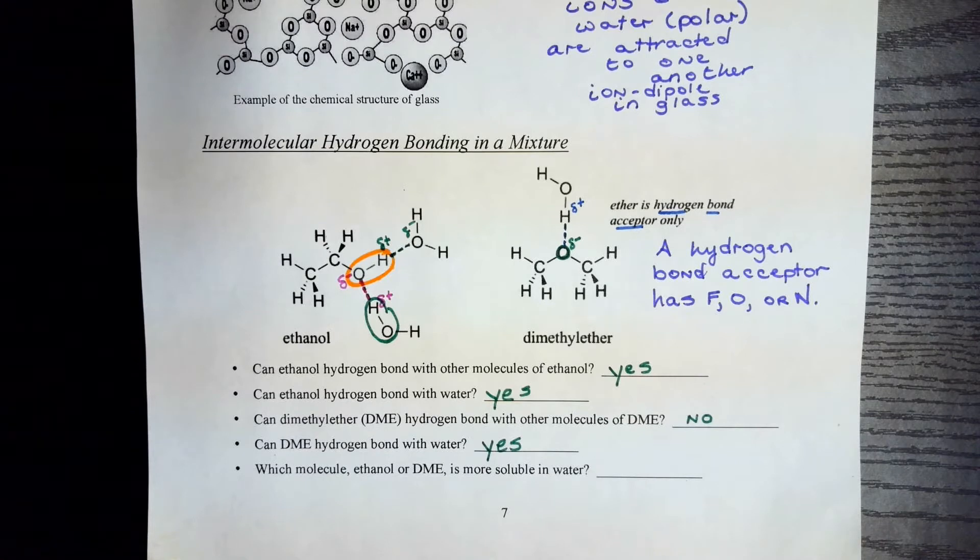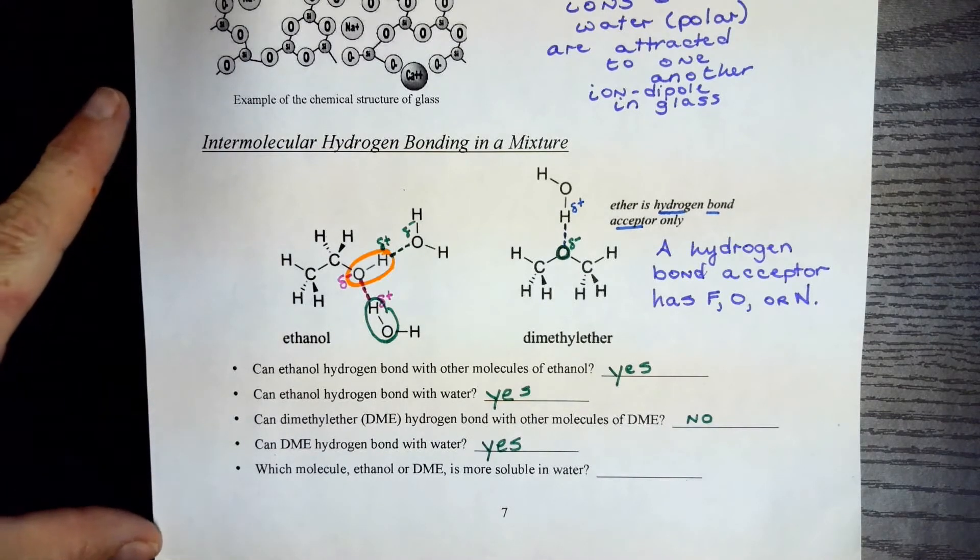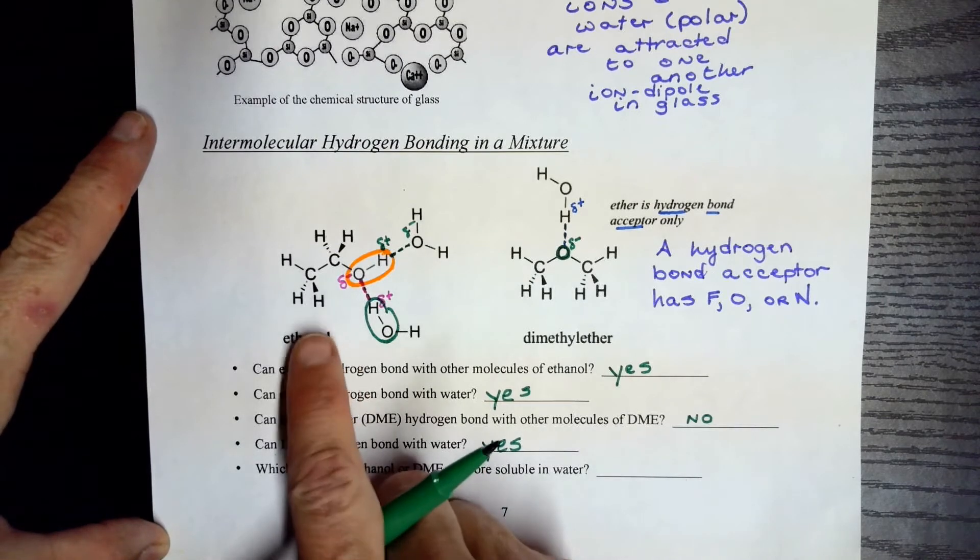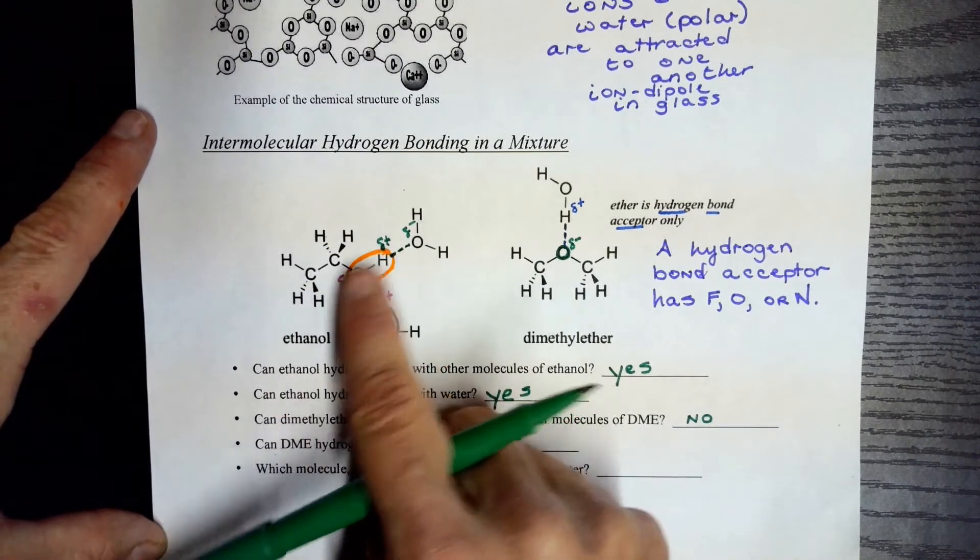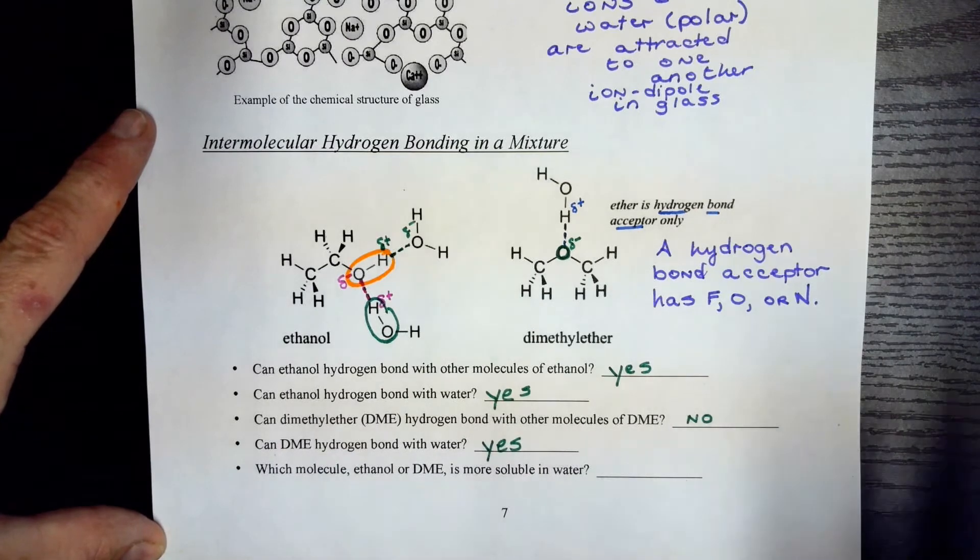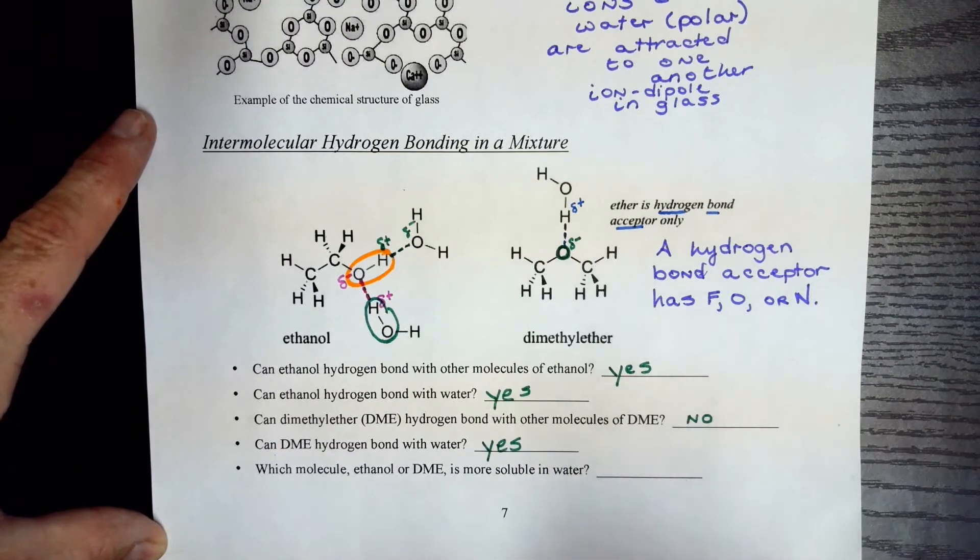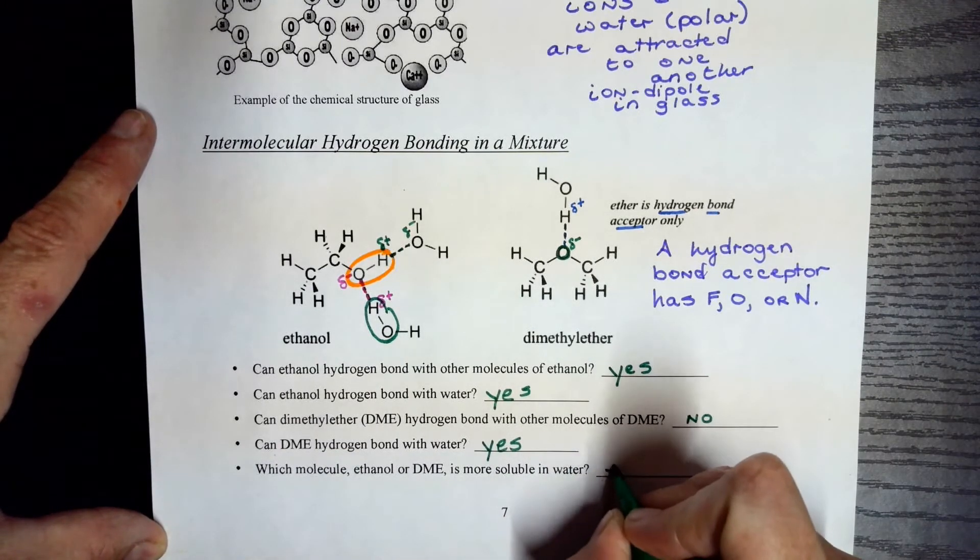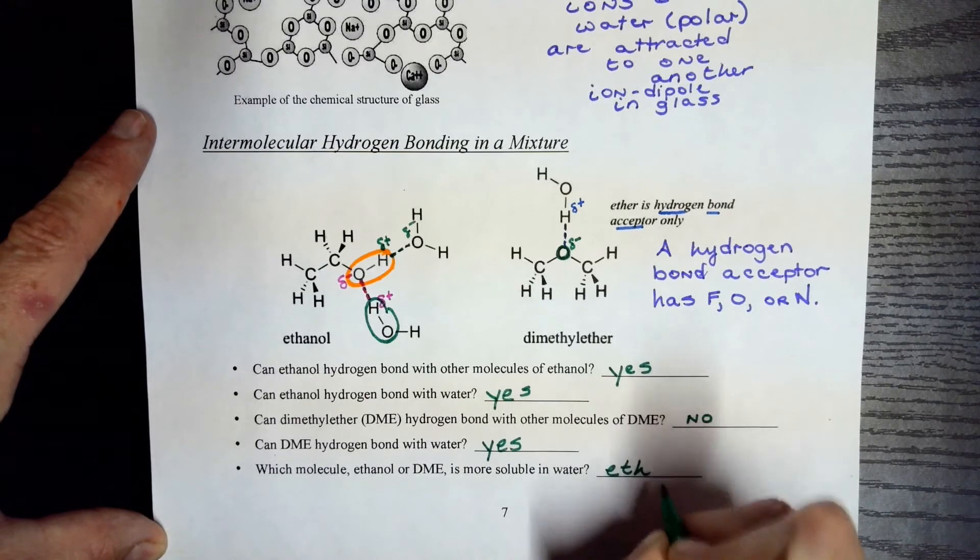Which molecule, ethanol or DME, is more soluble in water? When it's a two-way relationship like this, this helps with solubility issues. So ethanol will be more soluble in water.